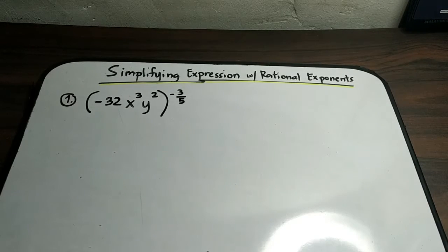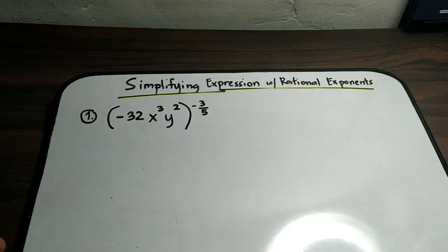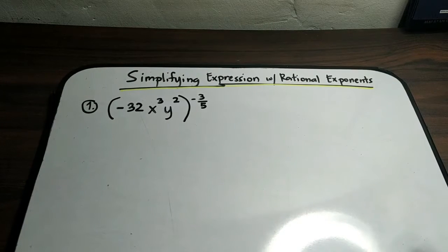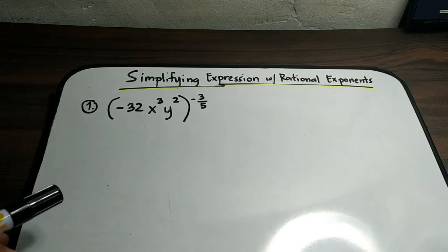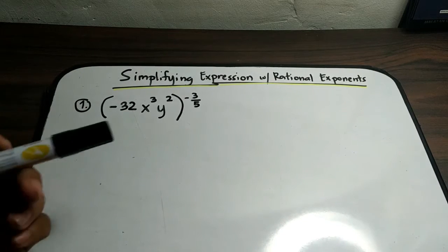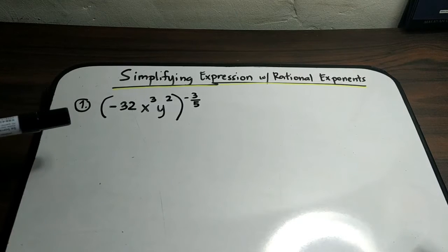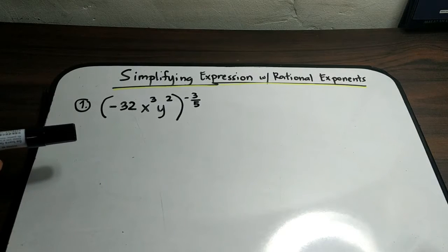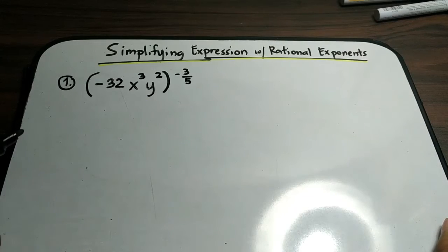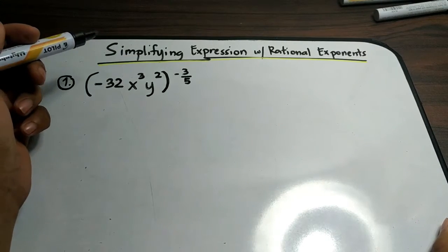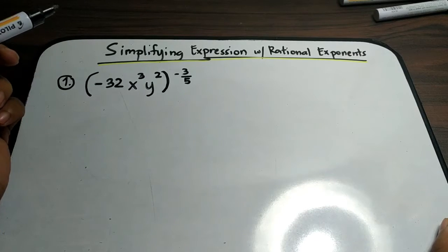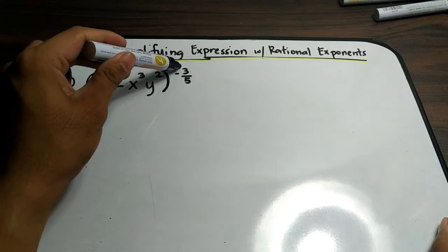Good evening, I am Mr. Gonzaga. Today I will create a video for simplifying expressions with rational exponents — this is part two. One of my students asked me to create another video for this topic, so shout out to those from Adreno 1 National High School. We have here number one: negative 32 x cubed y raised to 2, all raised to negative 3 over 5. As you can see, we have a fractional exponent.